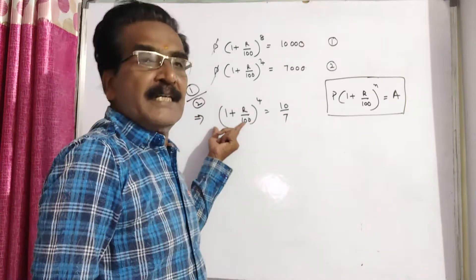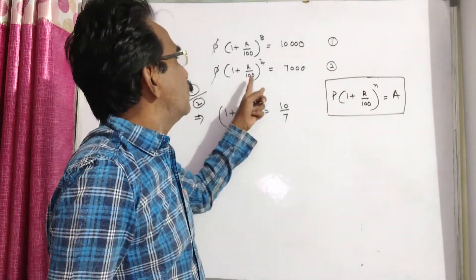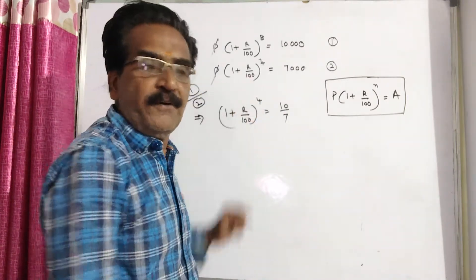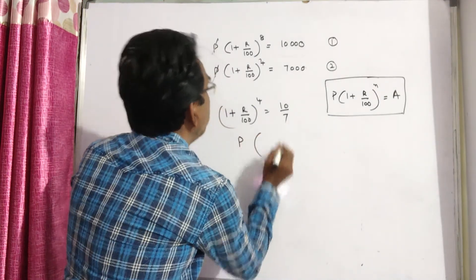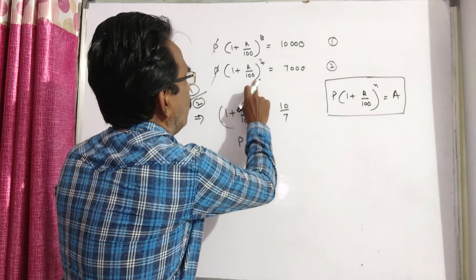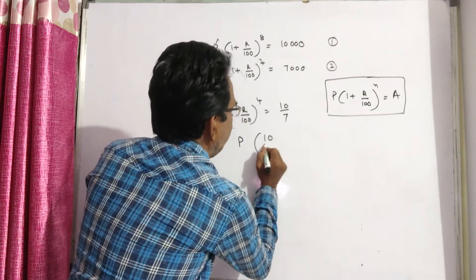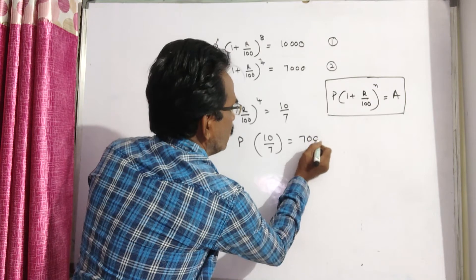Now, let us substitute this value in equation 2 to get the value of P. P into 1 plus r by 100 whole power 4, which is 10 by 7, is equal to 7,000.